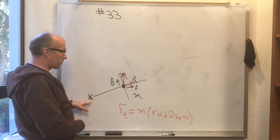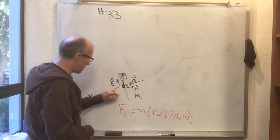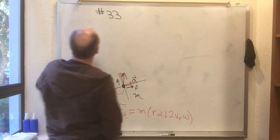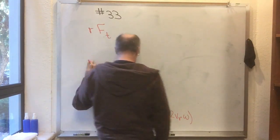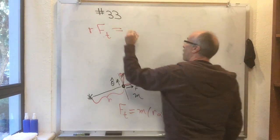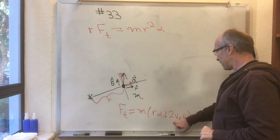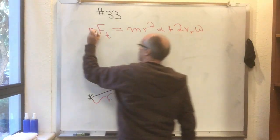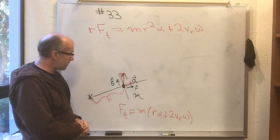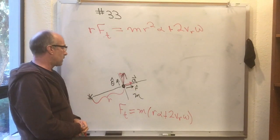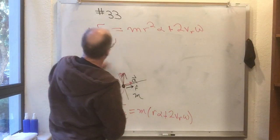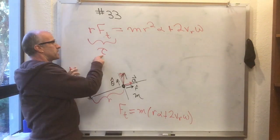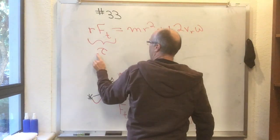There's some radius r from the arbitrary point I've chosen to where the particle is, and I'm going to multiply both sides of this equation by r. On the left-hand side I've got r times f_tangential. On the right-hand side I've got mr squared alpha plus 2 v_r omega. This quantity on the left — the radius times the tangential component of the force — has a name. It's called the torque, given the symbol lowercase tau, because we're already using T for time.